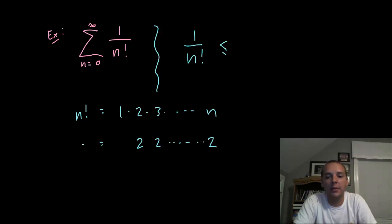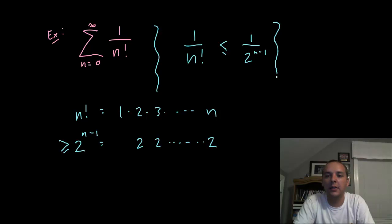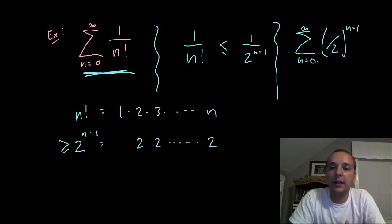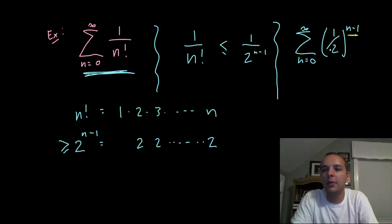If you write that out as a product, this would be 2 to the (n-1) because I did leave off the initial term here just to make sure the inequality is correct. So since n! is greater than or equal to 2^(n-1), then 1/n! will be less than 1/2^(n-1). Now why is that helpful? We can use that to compare this series to the series of (1/2)^(n-1), and you notice that that's basically a geometric series.